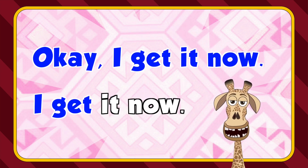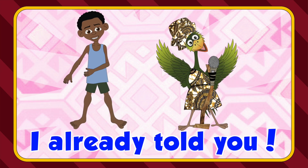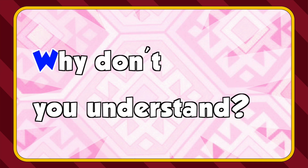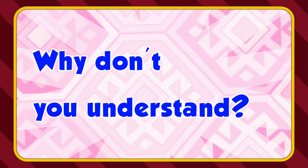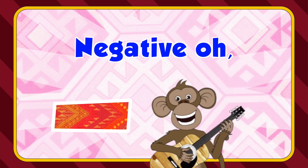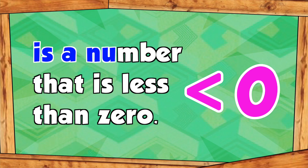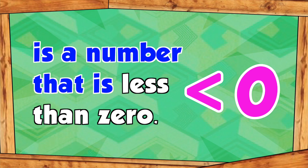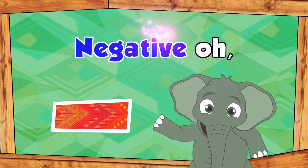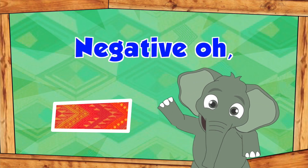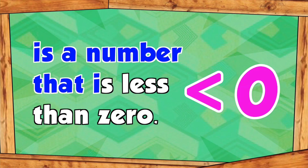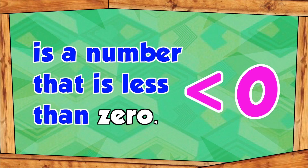I get it now. I already told you. It's about time. Why don't you understand? Finally. Negative is a number that is less than zero. Negative is a number that is less than zero.